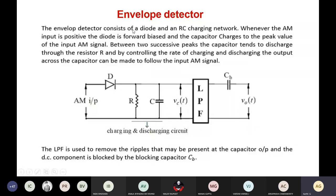The envelope detector consists of a diode and an RC charging network. Whenever the AM input is positive, the diode is forward biased, so it acts as a rectifier. The capacitor charges to the peak value of the input AM signal. Between two successive peaks, the capacitor tends to discharge through the resistor R. By controlling the rate of charging and discharging, the output across the capacitor can be made to follow the input AM signal. Finally, at the output of the capacitor, we obtain the envelope of the AM input.